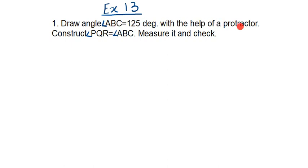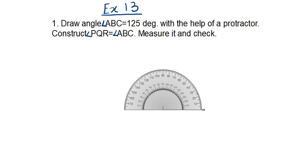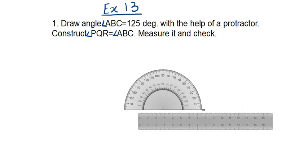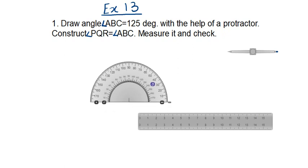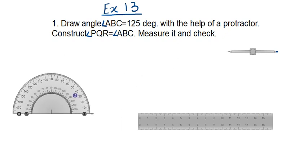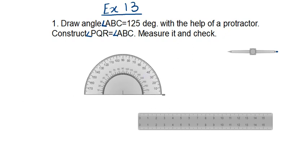Then it says construct angle PQR equal to angle ABC. We have to measure and check that it is equal. First we will take out our instruments — the protractor and the ruler, which are the first two important things. We will also need a compass. First we will make the 125 degree angle ABC with the protractor.